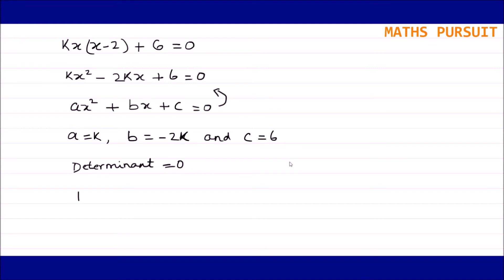That means I can write b² - 4ac = 0. This is what is given. When b² - 4ac = 0, in that particular condition only we can get two equal values of x. Now putting the value of a, b, c whatever we got in the above row.